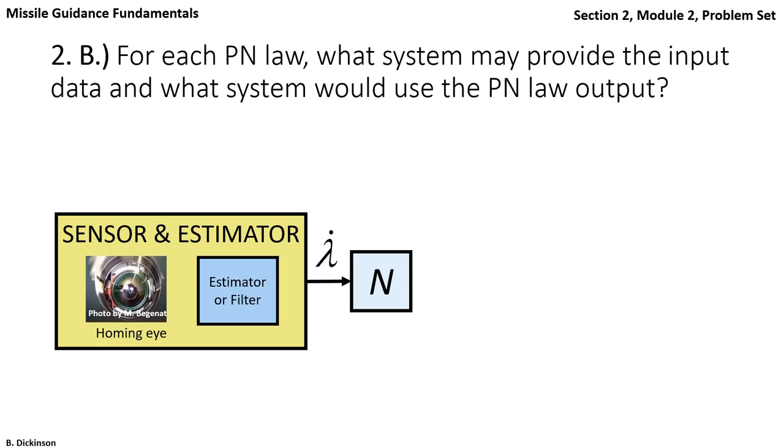Here I've shown an infrared seeker or an IR seeker that's combined with some sophisticated filter software that will produce the line of sight rate. The line of sight rate measurement is very noisy and hence the reason for the need of a filter. And the inputs to the sensor are just the real world engagement kinematics.